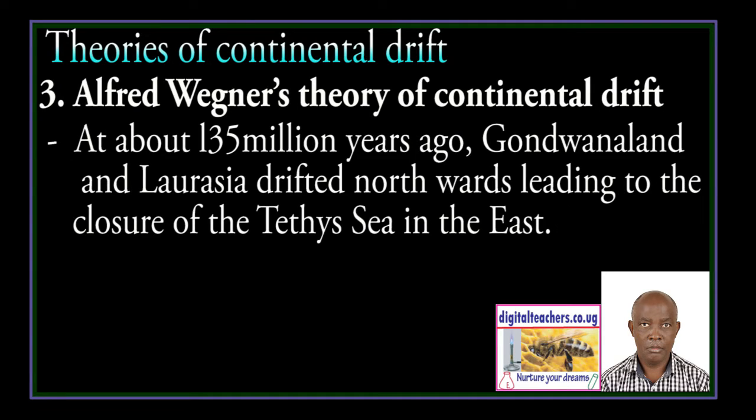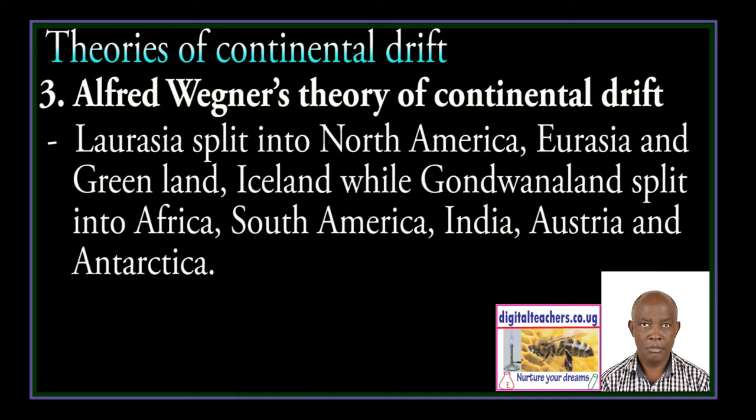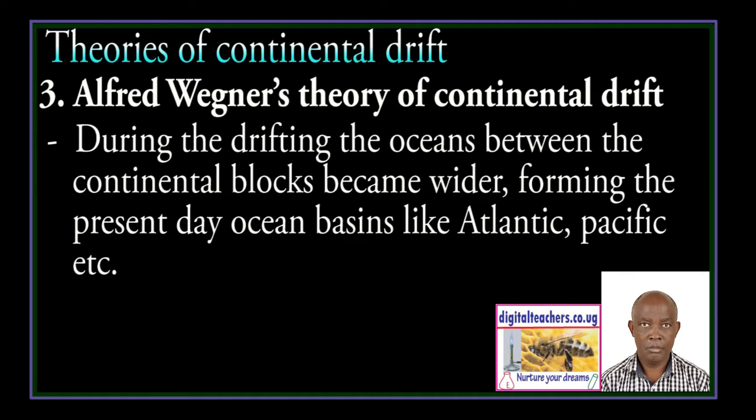At about 135 million years ago, Gondwanaland and Laurentia drifted northwards, leading to the closure of the Tethys Sea in the east. Laurasia split into North America, Eurasia, Greenland, and Iceland, while Gondwanaland split into Africa, South America, India, Australia and Antarctica. During the drifting, the oceans between the continental blocks became wider, forming the present-day ocean basins like the Antarctic and Pacific.